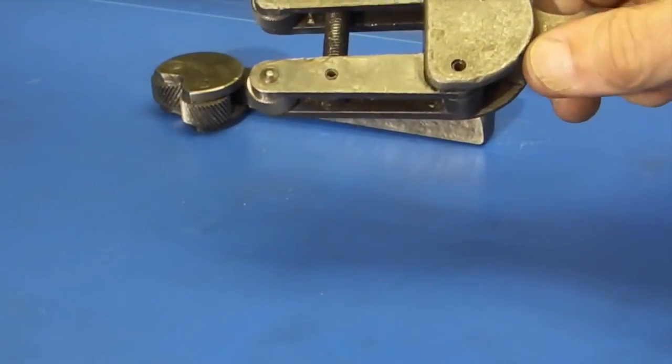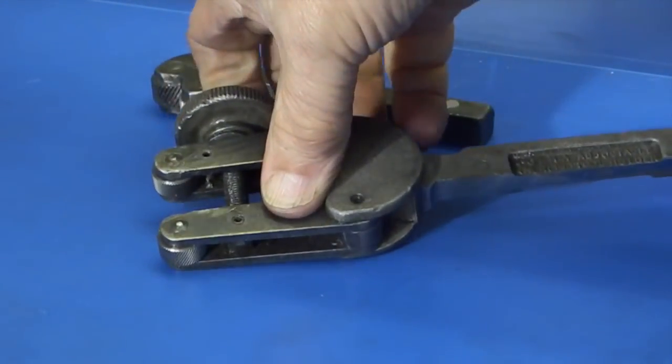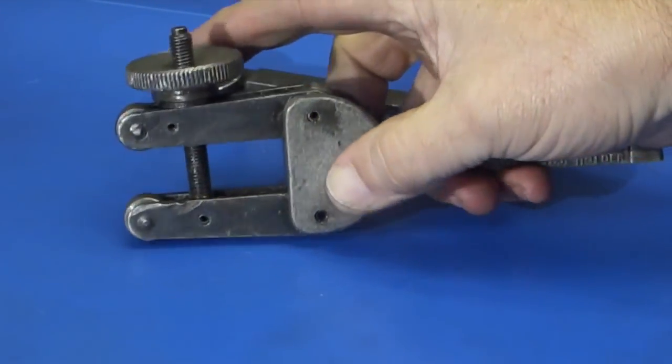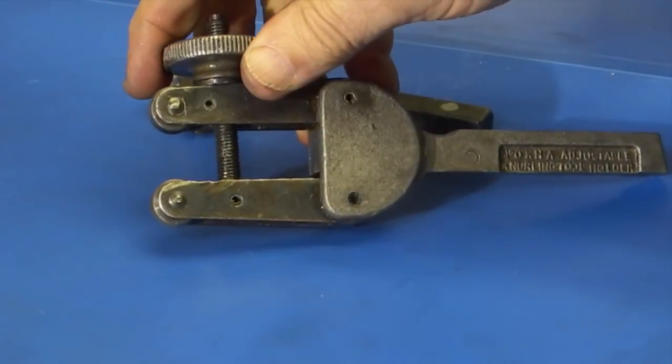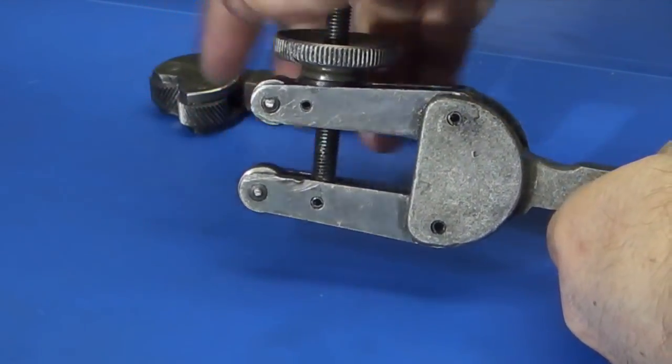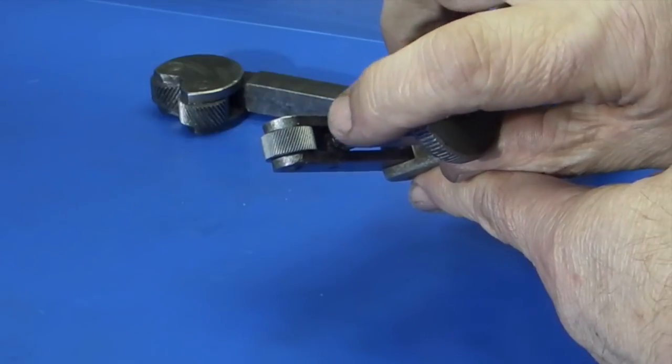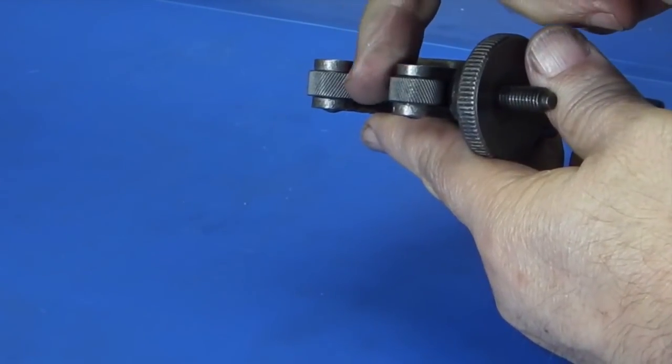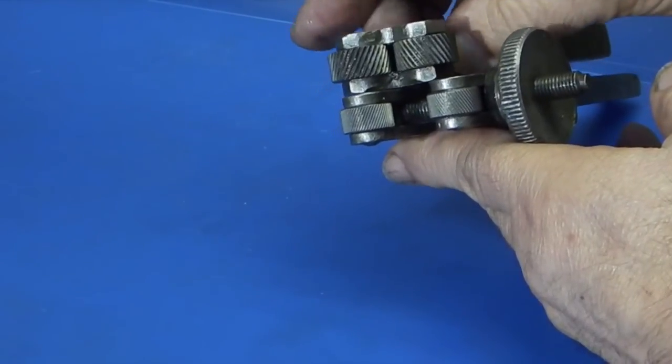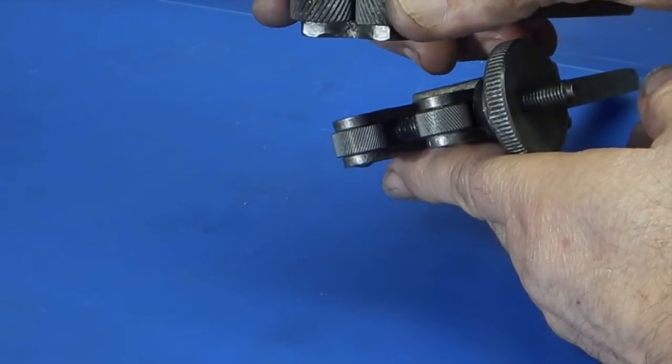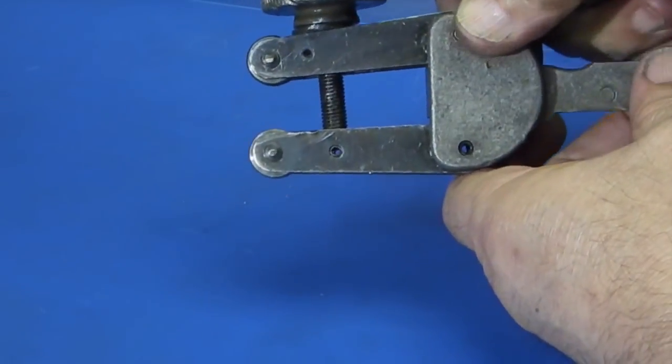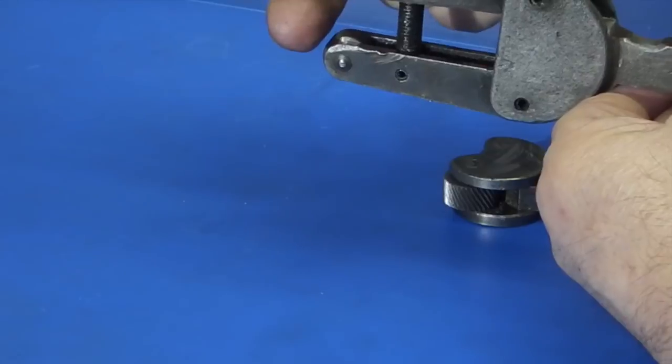This knurling tool is another type. It fits onto your tool post and has two arms adjusted by this nut on the top. As you tighten the nut, the two knurling wheels come closer, then you feed it into your bar and these two wheels crush the knurl. There's a difference between the two - the small one here is a fine knurl. You can get different knurling wheels to give you either a rougher or finer knurl. I need a quite rough knurl to use it as a hand screw to turn by hand, so I'll use this one. You set it on center line and bring the workpiece into the middle.